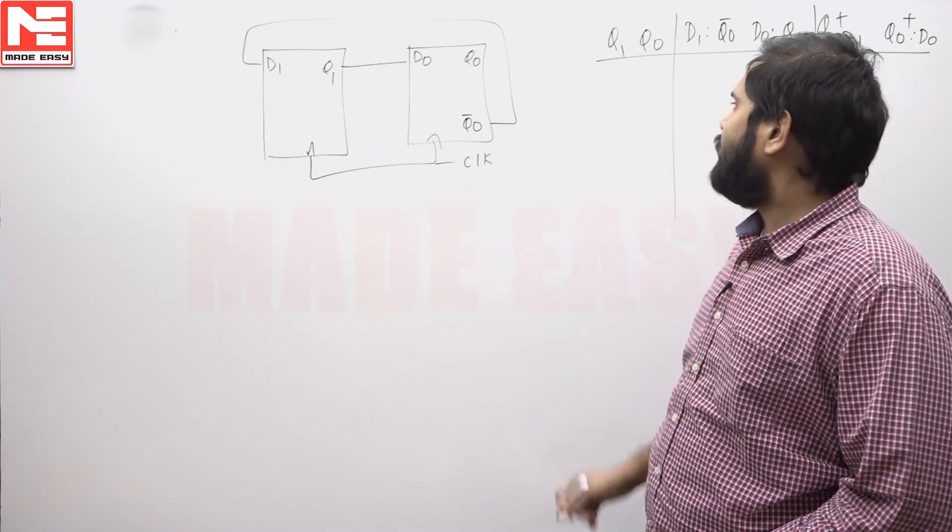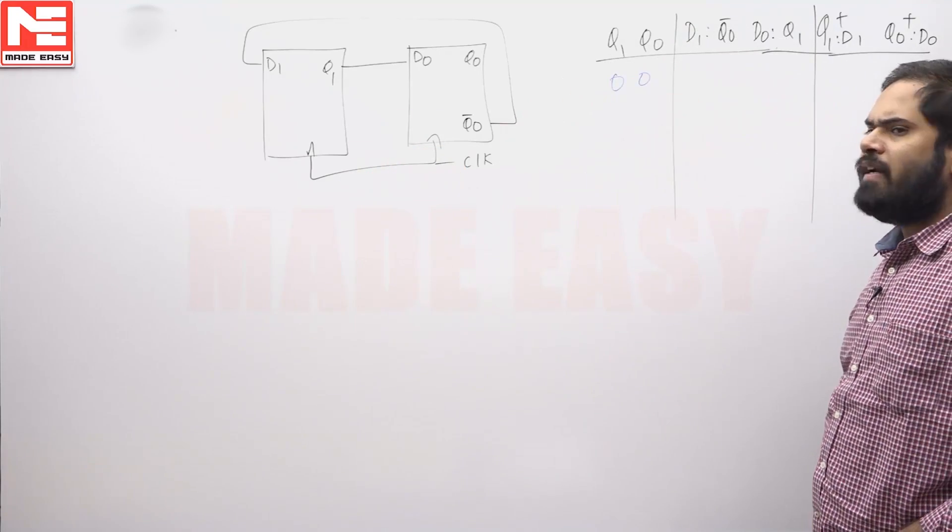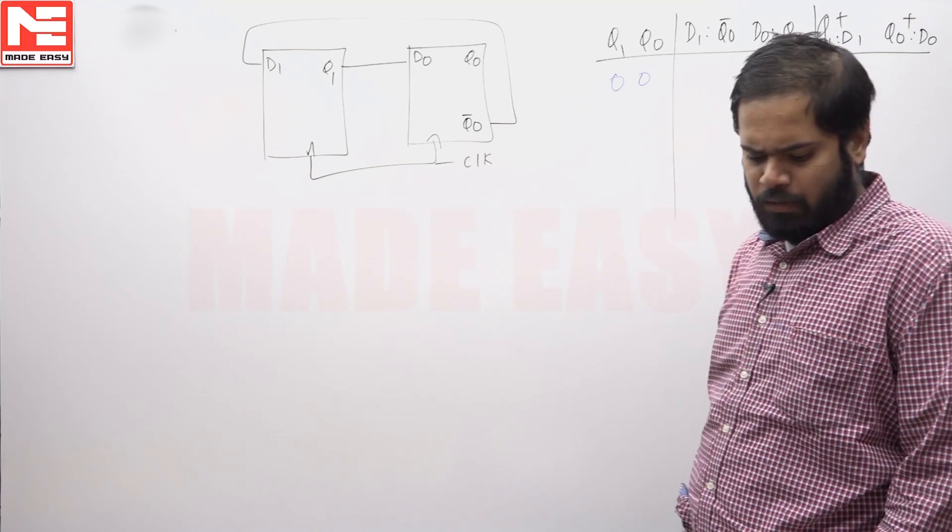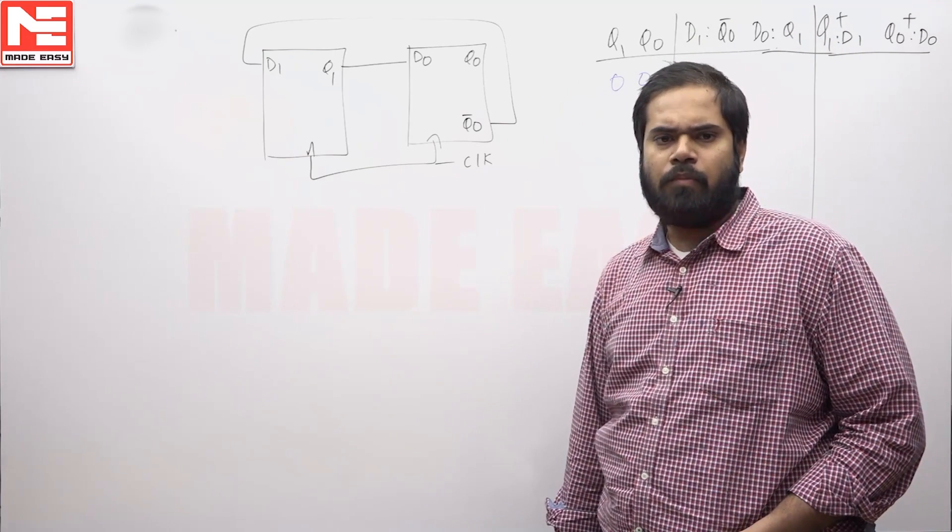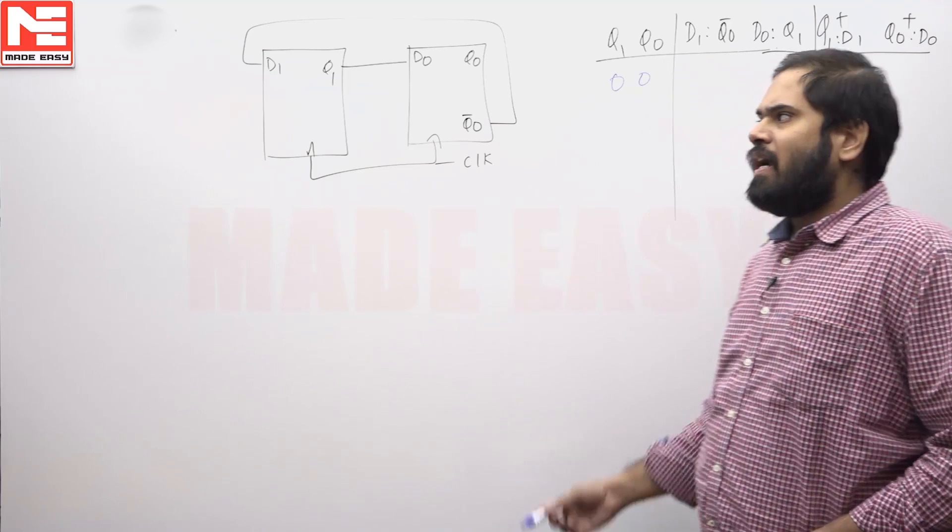A simple counter circuit is given with a starting state as 00. We need to find the mod number of this circuit, very simple question. Simple 2-bit counter using simple D flip flops. If starting state is 00,